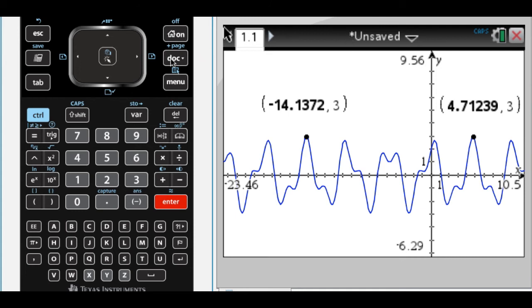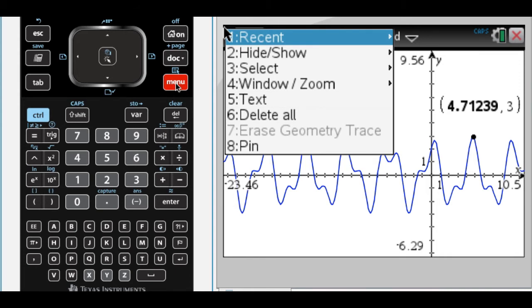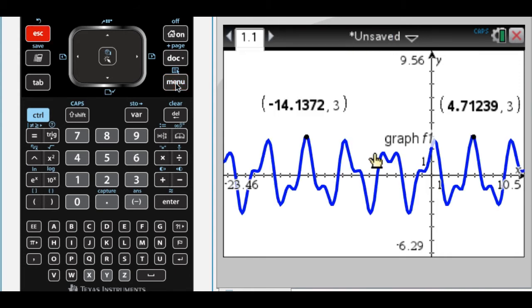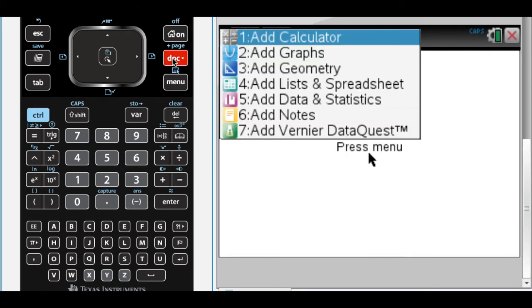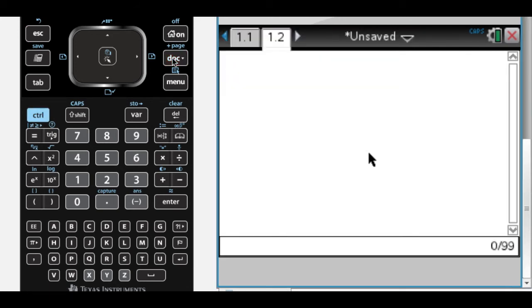And now I'm going to add a calculator page. If I do control doc, get calculator page, and then I want to do B minus A. So I think that's the period of this thing.